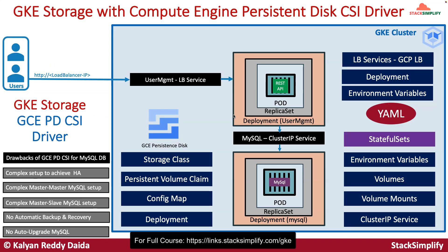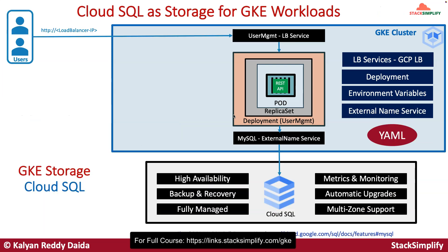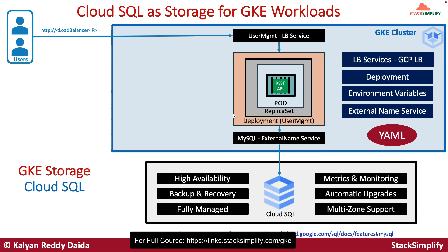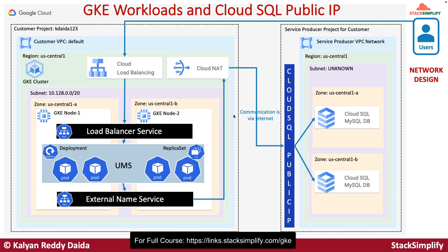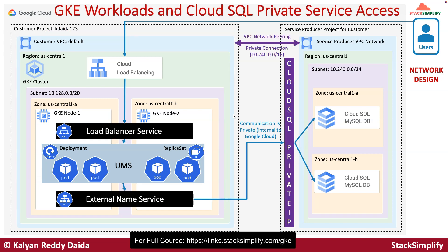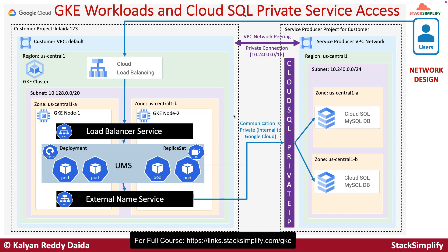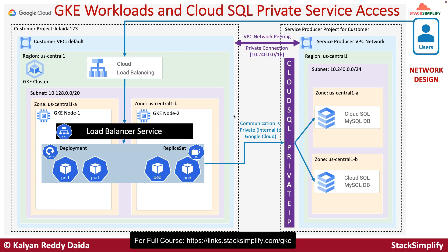In addition to that, we will move on to understanding whether instead of using the persistent disk CSI driver, we can use out-of-the-box databases available in Google Cloud like Cloud SQL. We will implement the same UMS user management web application use case with Cloud SQL after implementing it with GCE persistent disk for MySQL. After that, we will implement Cloud SQL with both public IP and private IP. When implementing it with private IP, we will explore VPC network peering and private connections in detail, and implement two demos — one with external name service and one without.